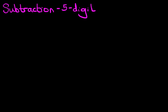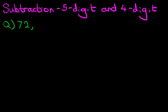Welcome to the tutorial on subtraction of a five-digit number and a four-digit number. We're going to do this using the vertical format. So let's have a look at the question we're going to be working through. What is 72,341 minus 6,424?